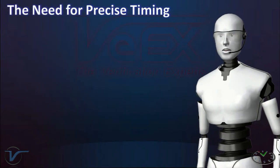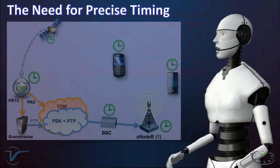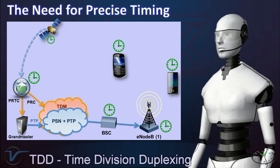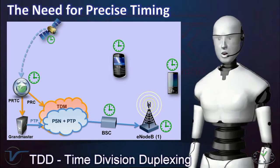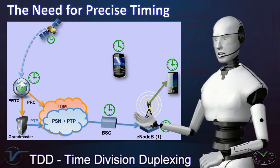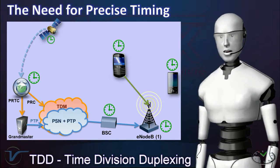Why do we need precise time? Here is one example. 4G cellular networks, like LTE Advanced and LTE TDD, use time division duplexing, which refers to using one shared frequency to transmit and receive.